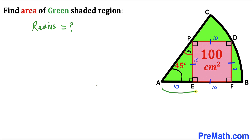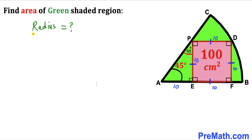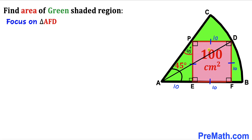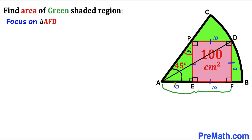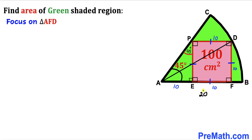We know that AB is the radius of sector ABC, and AC is the radius of the same sector. To calculate the radius, I've connected point A with point D on the circle. This gives us right triangle AFD, where side AF is 10 plus 10 = 20 centimeters, and side FD is 10 centimeters. We are interested in calculating side length AD.